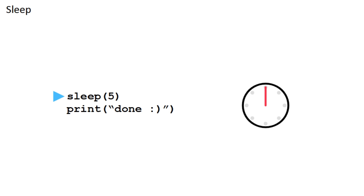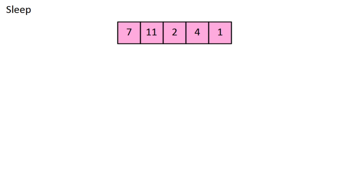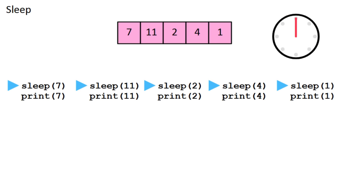Next is sleep sort. The sleep function simply waits a given amount of time before executing the next line. If you use multi-threading, you can have several of these run concurrently. So to sort the list, you start a thread for each piece that sleeps a duration proportional to its value, and then outputs that value.